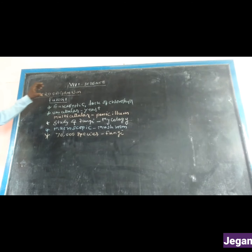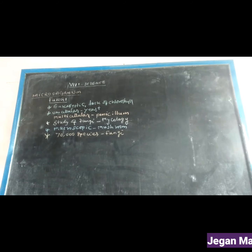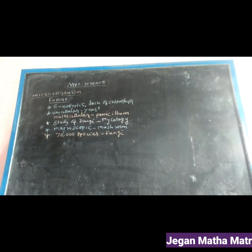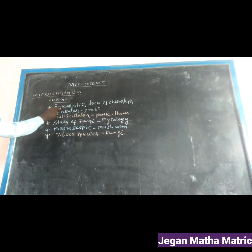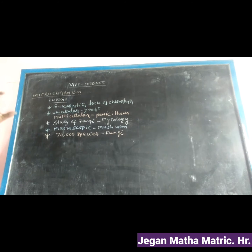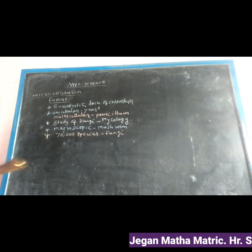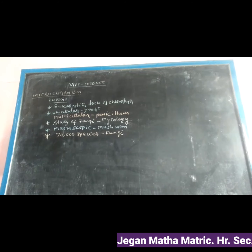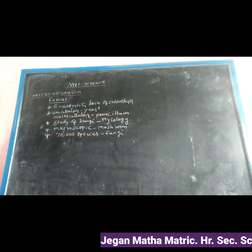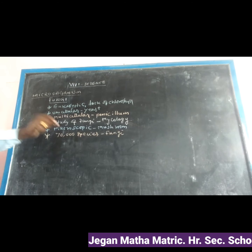8th standard science, microbiology subtopic: fungi. Fungi are eukaryotic organisms — 'eu' means 'well' and 'karyotic' means well-developed nucleus. They lack chlorophyll, so chlorophyll is absent, and therefore they follow a heterotrophic mode of nutrition.